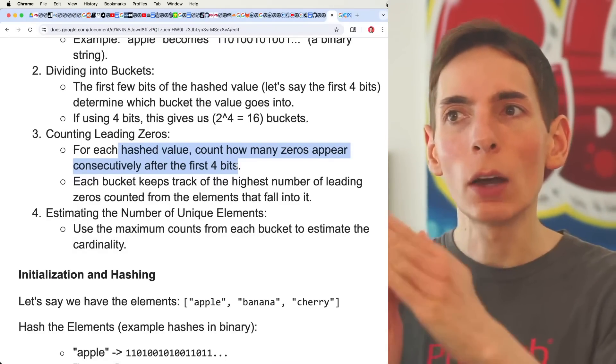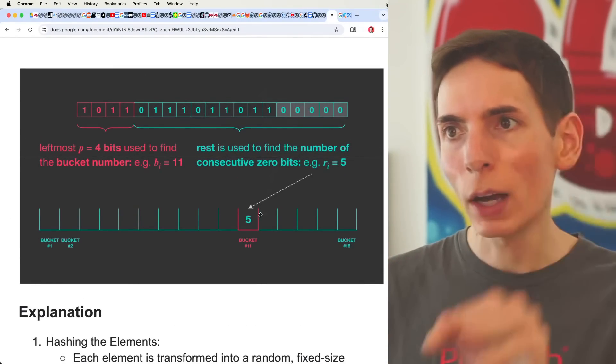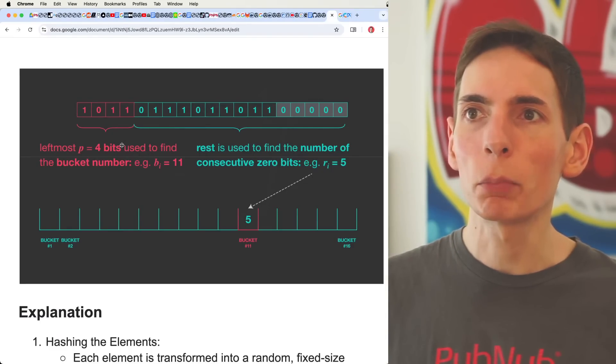So you can count the last four bits. And as soon as you hit a one, you stop the count. Really simple, kind of like this. So one, two, three, four, five. We hit a one, done. So there's five. So this goes into the 11th bucket.